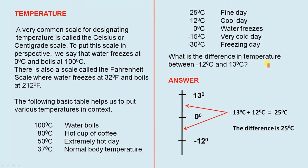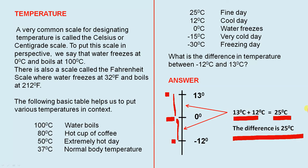What is the difference in temperature between minus 12 degrees Celsius and 13 degrees Celsius? From zero down to minus 12 represents 12 degrees, and from zero up to 13 represents 13 degrees. When you add those two together, you get 25 degrees Celsius — and that is the difference.